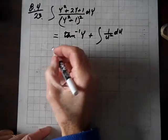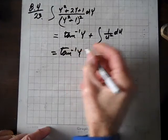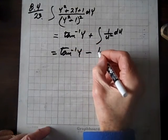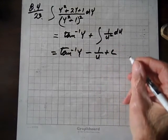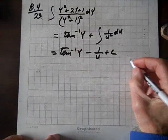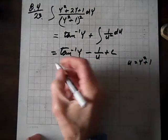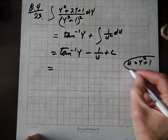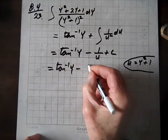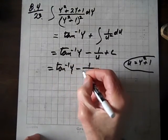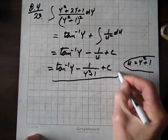Okay, and so this equals the inverse tan of y minus 1 over u plus c. And our u, as you recall, u equals y squared plus 1. So now we have inverse tan of y minus 1 over y squared plus 1 plus c. And we are done.